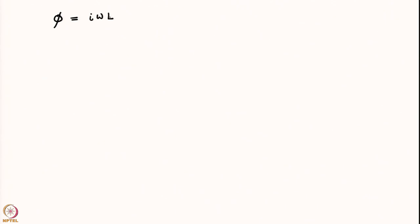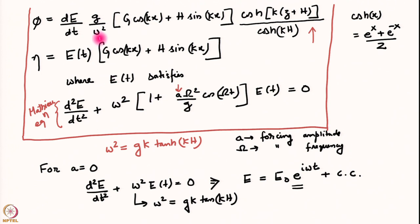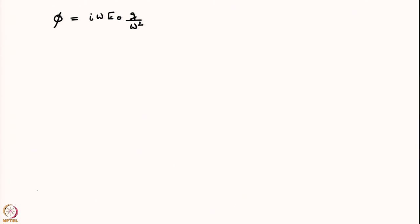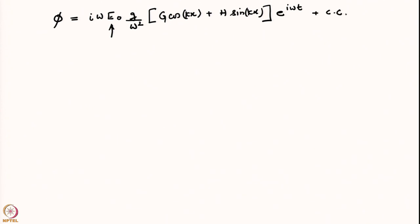The perturbation velocity potential takes the form iω E₀ (g/ω²) times the spatial structure (g cos kx + h sin kx). Taking the time derivative of E brings a factor of iω. So I have iω E₀ (g/ω²) into g cos kx + h sin kx, noting there is a missing cosh factor here.